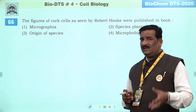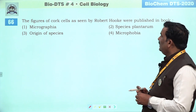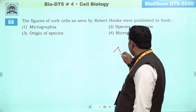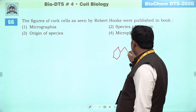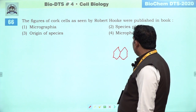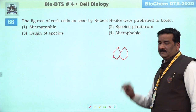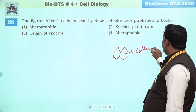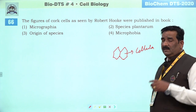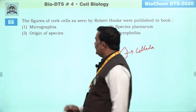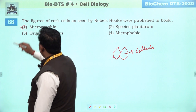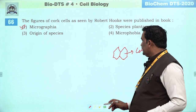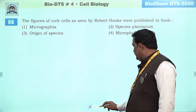Next question: yeh ek achha question hai — figure of the cork cell. Robert Hooke ne sabse pehle kuch chamber like structure dekhe the, kuch room like independent unit dekhe the — inhone 'cellula' naam diya tha. Jiski jo description di thi, woh unhone apni ek kitab mein di thi jiska naam tha 'Micrographia'. Achha information based question hai — hume yaad rakhna chahiye.